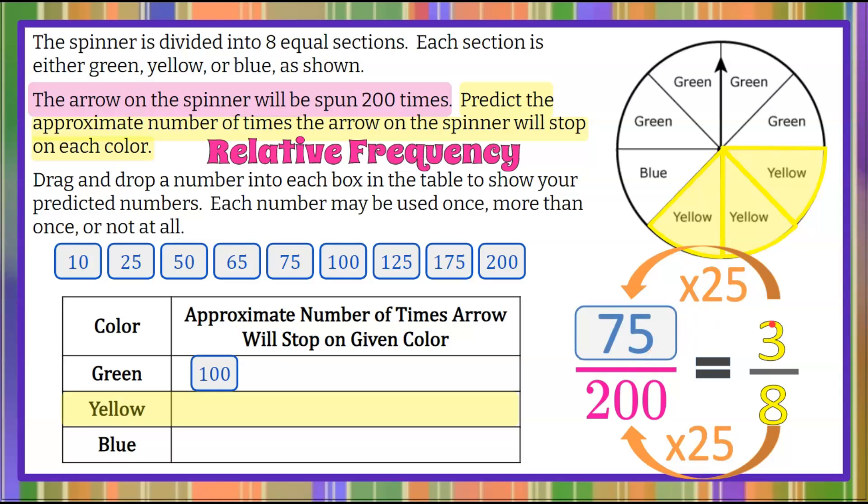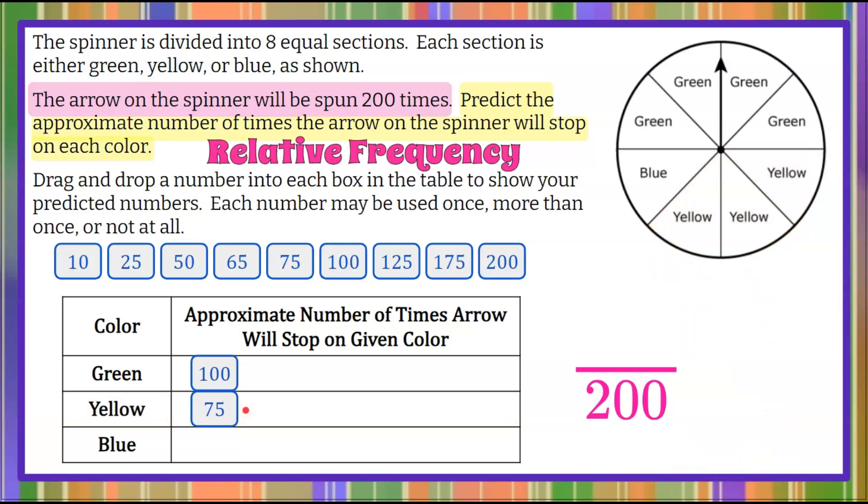So we have a probable outcome of three out of eight. Relative frequency for it to happen 200 times, we would expect that it would land on yellow 75 times out of 200. One more to go. Let's do blue.